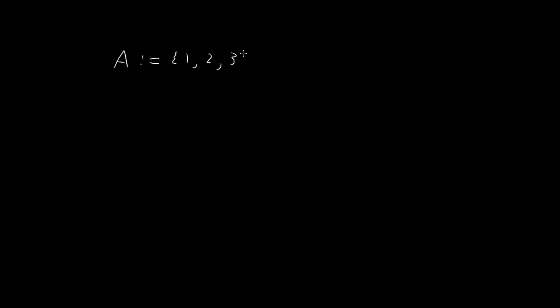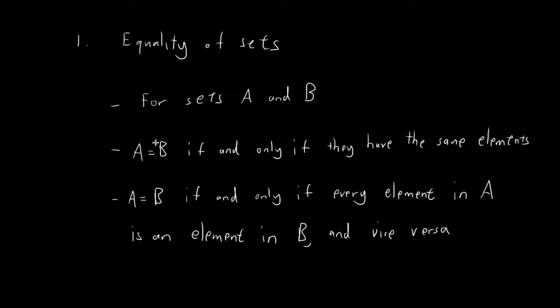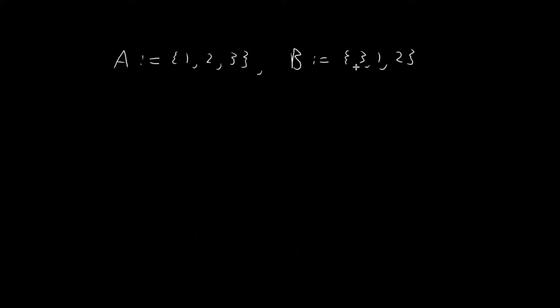Moving on with our first example, let's say we have two sets A and B. So A is defined to be the set consisting of the numbers 1, 2, and 3. And B is defined to be the set consisting of the numbers 3, 1, and 2. The question is whether A is equal to B or not. Going back to the definition, A will be considered equal to B if they have the same elements — and obviously, they do indeed have the same elements. So we can conclude that A is equal to B.